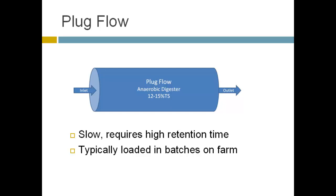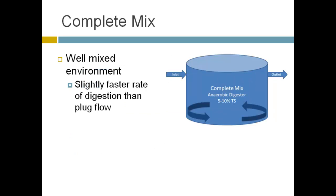For conventional technologies: a plug flow reactor — widely used on US farms — has manure enter and travel through the system as a plug. These have slow reaction times and require high retention times, typically loaded in batches daily. The problem with rocks and sand is that as manure travels slowly across the reactor length, these materials build up over time. That buildup can ultimately cause reactor failure, decreases retention and reaction time, and ultimately the reactor would need to be shut down periodically to remove that material.